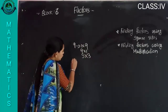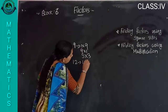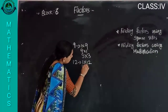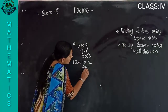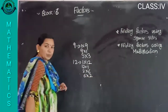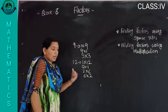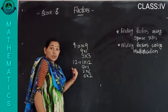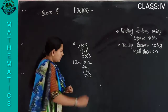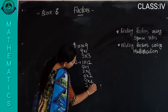Then twelve. How will we write twelve as a product? One into twelve, twelve into one, two into six, six into two, three into four, four into three — all equal twelve.